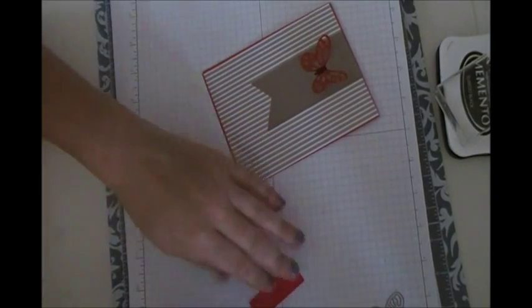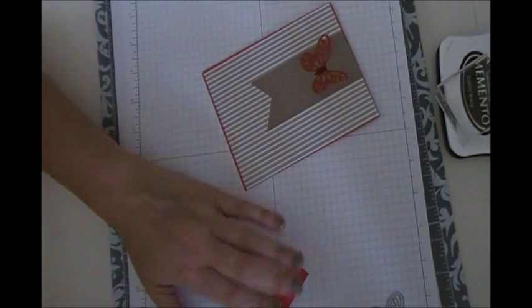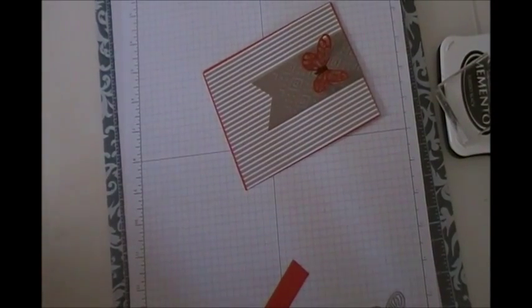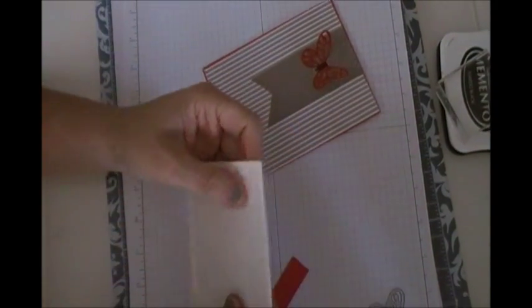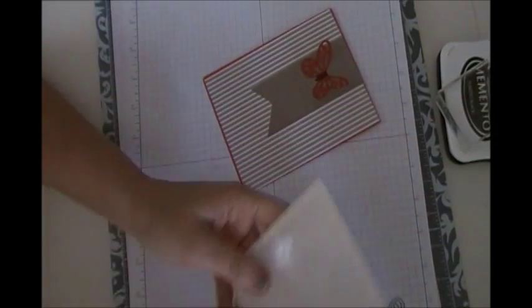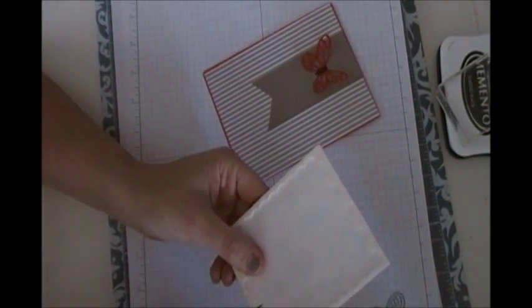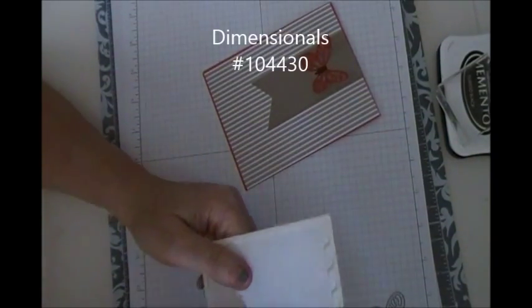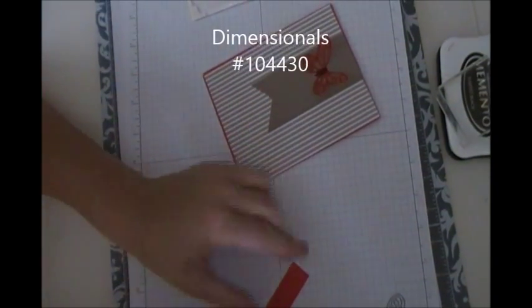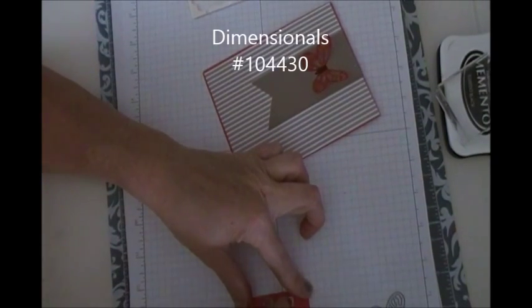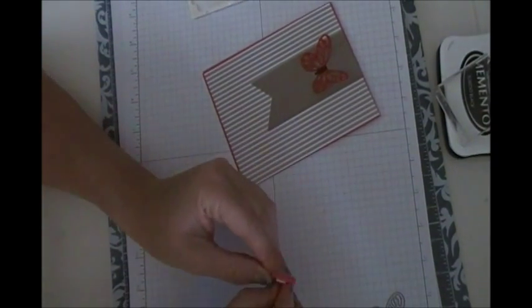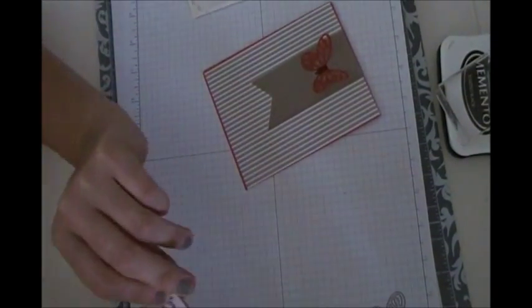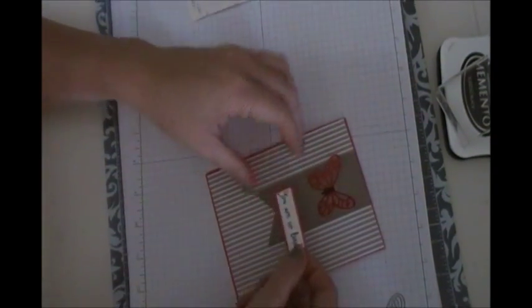Now we're going to use some dimensionals, but I'm at the very bottom of my dimensionals, so I'm going to use the outside edges. I don't know if any of you do that, but it's still part of the adhesive, so why waste it, right? So we're going to cut some of that down, and I'm going to put that on the back, and we're going to pop that sentiment up right on top of the banner underneath the butterfly. Just peel that off, and we're ready to stick this down.